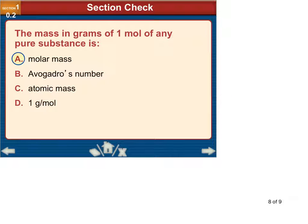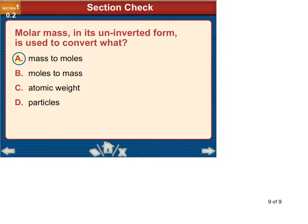So a couple quick review questions you should be able to answer. Here, a mass in grams of one mole of any substance is called molar mass, so you know that. And molar mass in its unconverted form is used to convert what? Mass to moles. Not as important as the preceding question, but still kind of important.